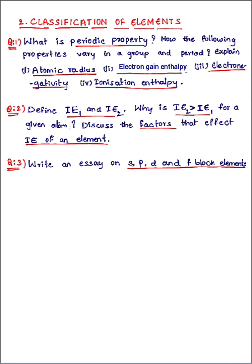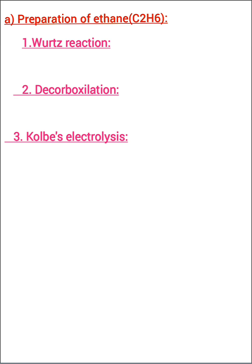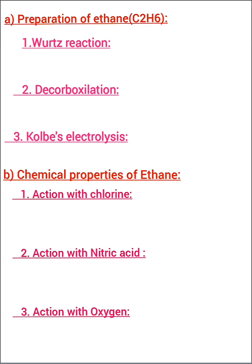Now the third important chapter for eight marks is organic chemistry. We have two questions combined here: question a is about preparations of ethane and question b is about properties of ethane, each carrying four marks for a total of eight. For question a, write at least three preparation methods of ethane. For question b, write at least three chemical properties of ethane with equations. Make sure to write chemical equations for both preparation methods and chemical properties.